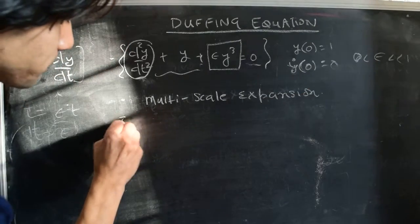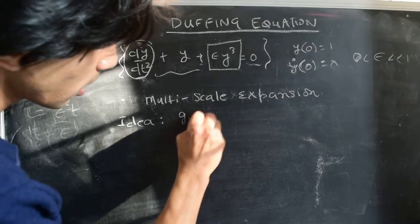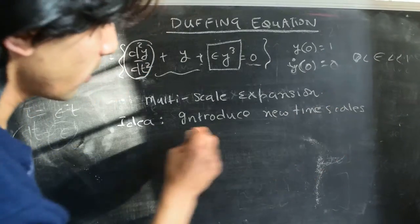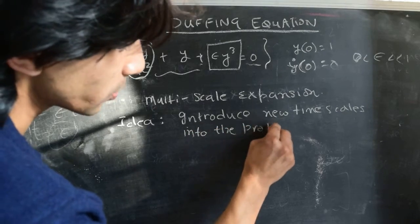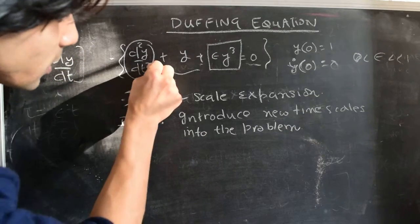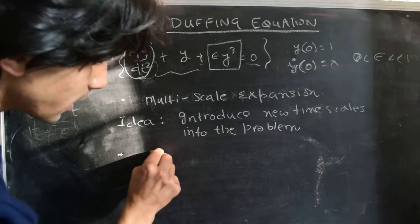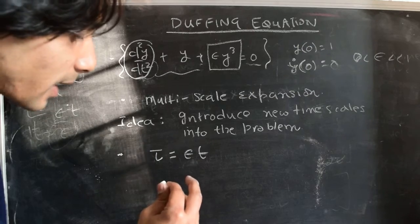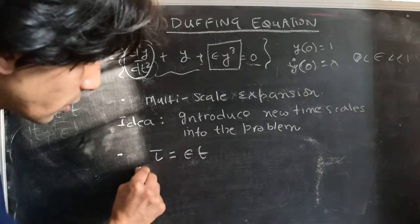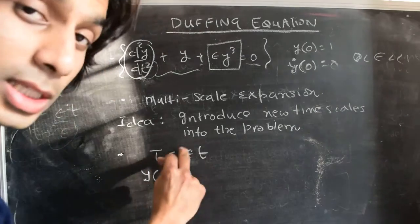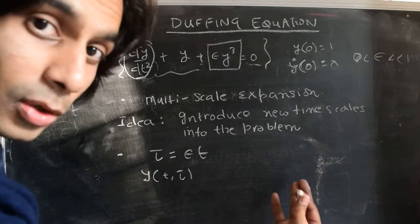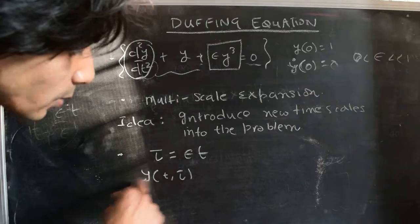The idea is to introduce new timescales into the perturbation expansion method. As an example, to lowest order, we'll work with two timescales. We already have a physical timescale t. We introduce a new timescale tau, which is epsilon times t. We'll think of y as a function of these two timescales, t and tau, treating them as two independent variables — though they're not strictly independent since tau equals epsilon times t.